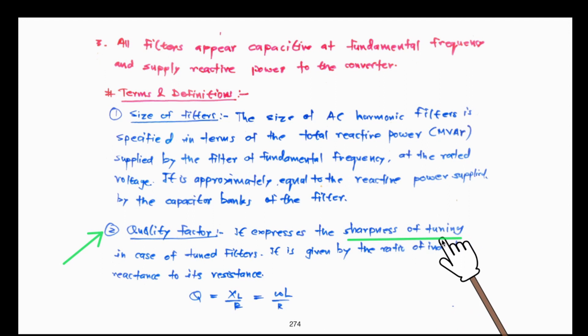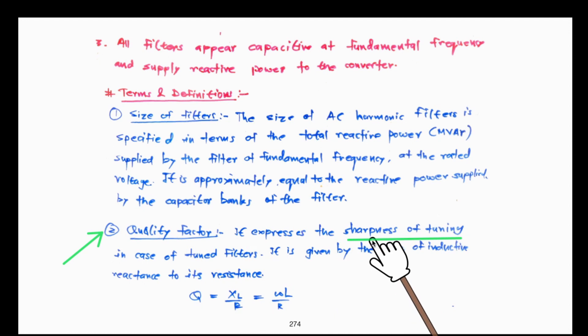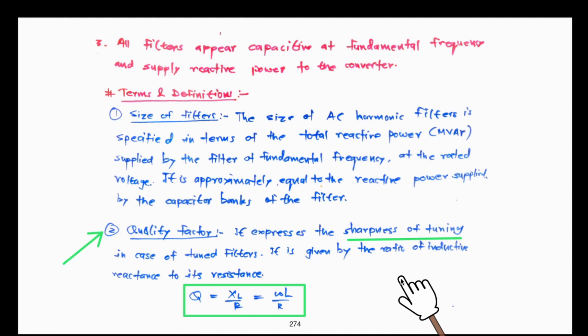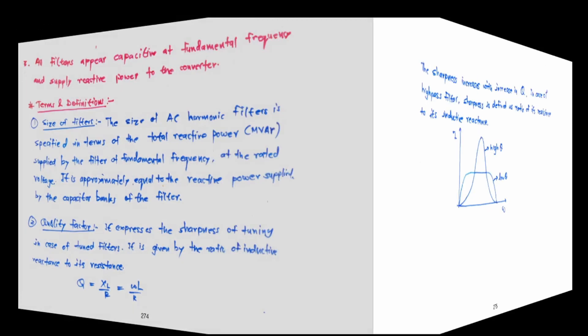All harmonics are present — fundamental, 11th, 13th, 23rd, 25th — but a single-tuned filter for the 11th harmonic must be able to identify and select only that frequency. The Q factor is obtained as the ratio of inductive reactance to resistance: Q = ωL/R, or X_L/R. A diagram on the next slide will provide a better understanding of the Q factor.